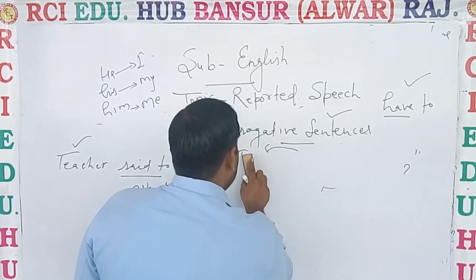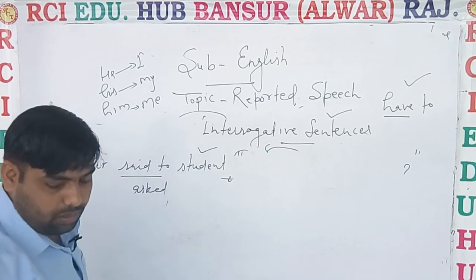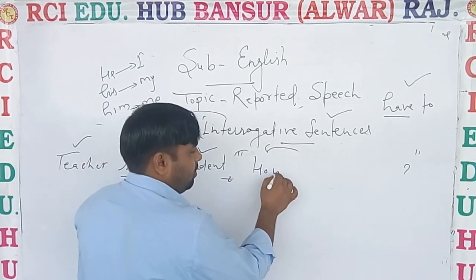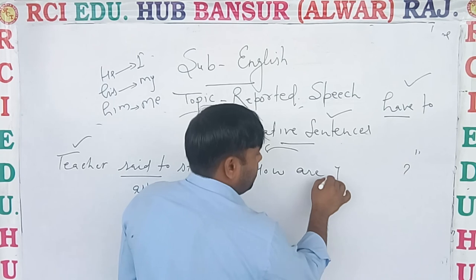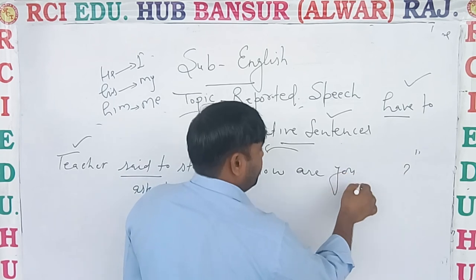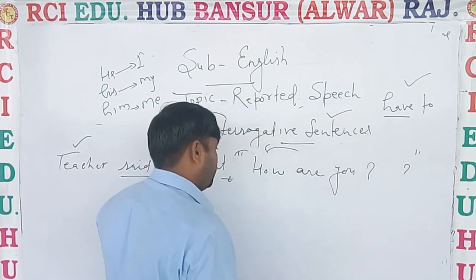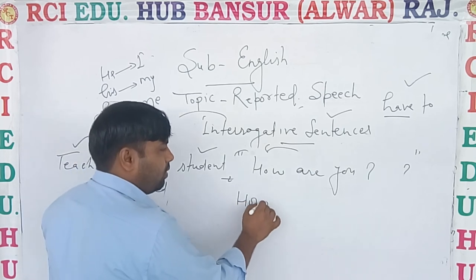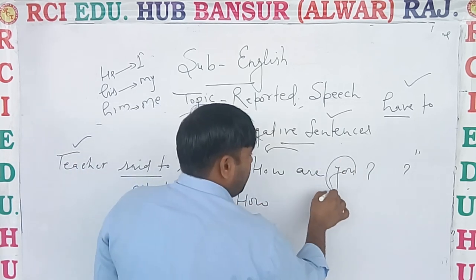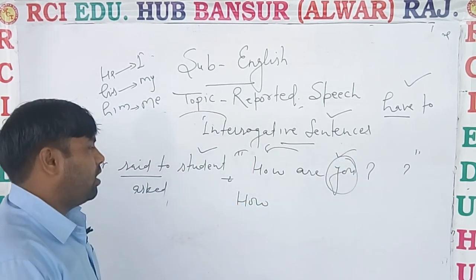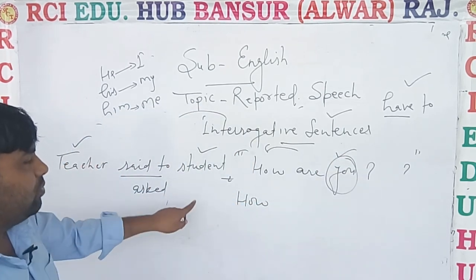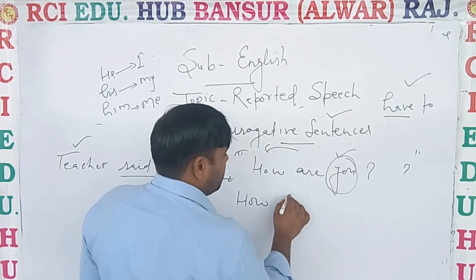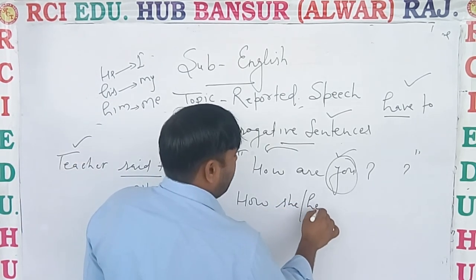In the same way, one more example: 'How are you?' Then 'how' will be 'how'. Firstly we will use 'you' — according to student, then 'she' or 'he' — and change 'are' accordingly.